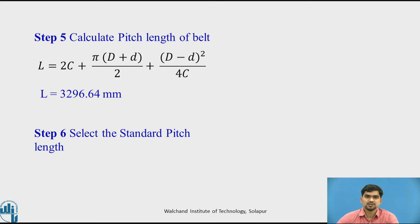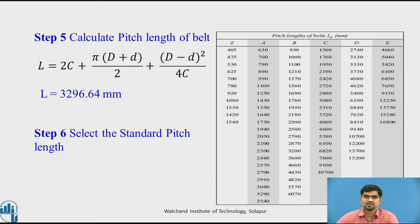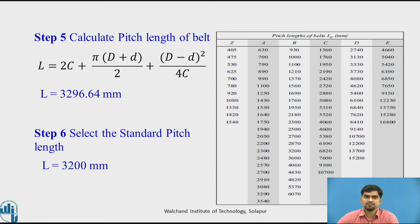Step 6: select the standard pitch length. The calculated pitch length L is 3296.64 mm. We check the manufacturing data book to see whether this pitch length is available. For the B section belt it is not available, so we have to select the pitch length as 3200. The selected pitch length for the V-belt is 3200 mm.